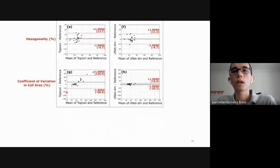The coefficient of variation plot has the same behavior as shown in the last slide, but for parameters like hexagonality, which doesn't depend on the cell sizes, the plots are quite similar.